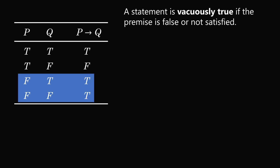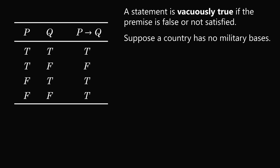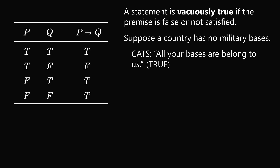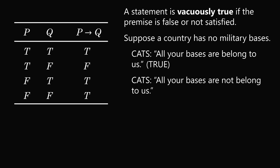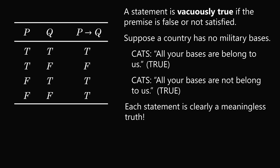To give some intuition on that, suppose we take a country that has no military bases. Then an evil empire cat says 'all your bases are belong to us.' That would have to be a true statement, because if a country has no military bases then all of the bases can belong to cats. If cats also said 'all your bases are not belong to us,' that would also be true because there are no bases at all. Each statement is clearly a meaningless truth.